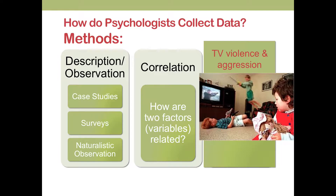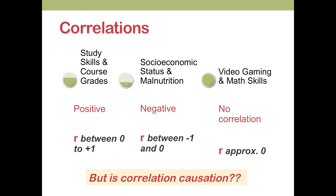Psychologists also use correlations to understand how two factors are related. For example, is watching violence on TV related to aggression in childhood? A study published in the Developmental Psychology Journal in 2003 found a correlation: children who regularly watch violent TV are more likely to become aggressive and criminal in adulthood. Correlations can be positive — meaning two things are related in the same direction. For example, as your study skills increase, so do your course grades.